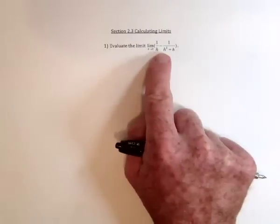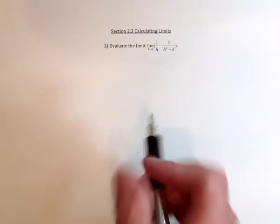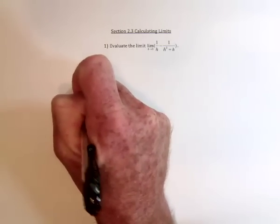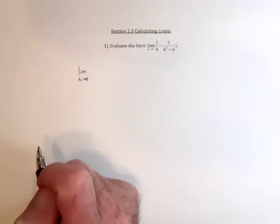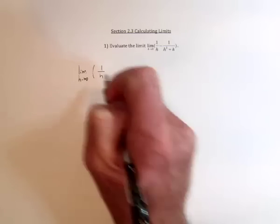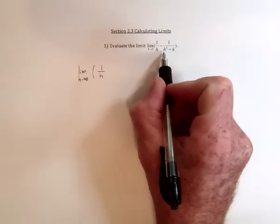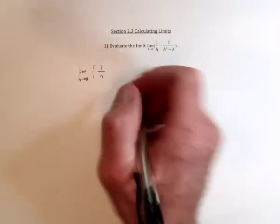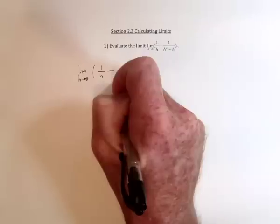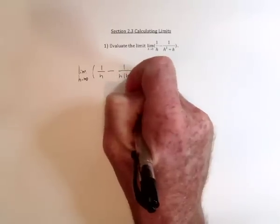This is saying you've got two fractions and subtract them. So what we need to do is get a common denominator in order to combine the two fractions. So the first one is 1 over h. And then this one needs to be factored. So factor out an h. So it's going to be h times h plus 1.